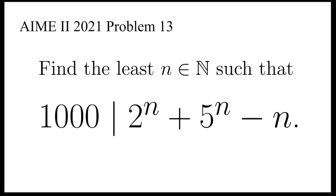In this video, we are going to find the smallest natural number n such that 1,000 divides 2 to the n plus 5 to the n minus n.